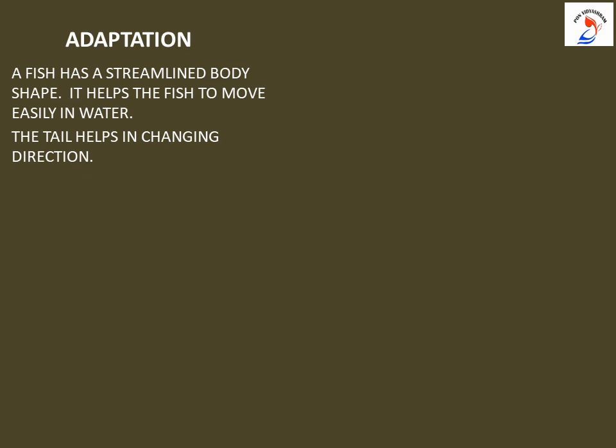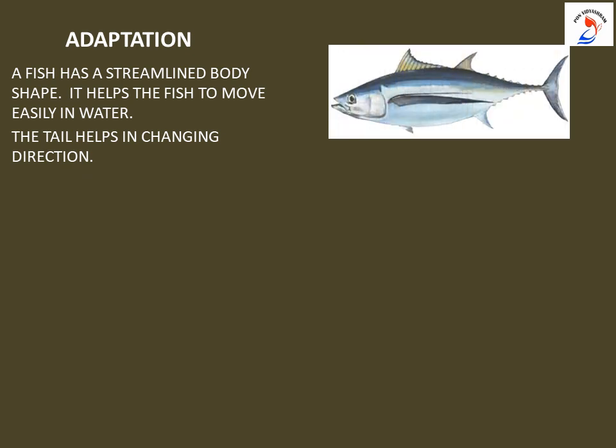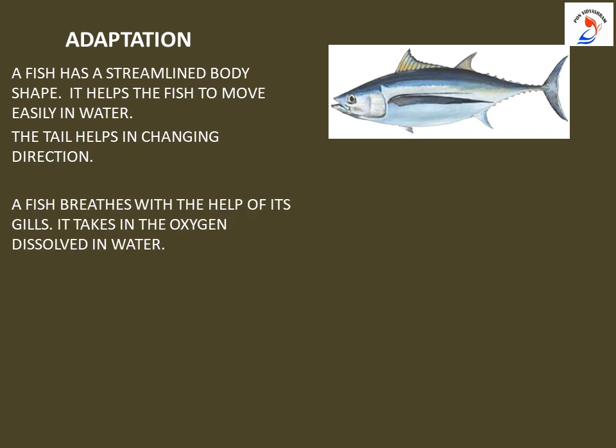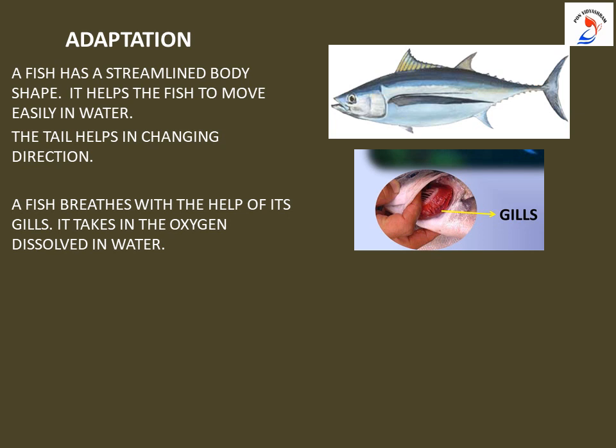A fish has a streamlined body shape, which helps it to move easily in water. A streamlined body means the fish body is shaped like a boat — broad in between and narrow at both ends — which helps it move easily through water. The tail helps in changing direction. A fish breathes with the help of its gills and takes in oxygen dissolved in the water.